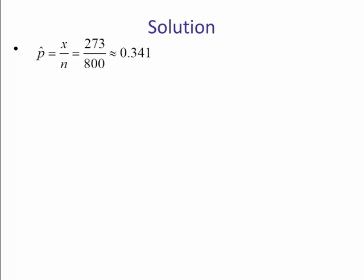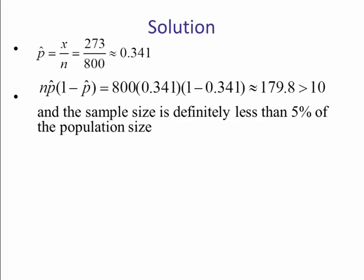So the solution: p-hat is x over n, which in this case x is 273, n is 800, and if we round to three decimal places, we get p-hat to be 0.341. Check our requirements: n times p-hat times 1 minus p-hat is 179.8, which is greater than 10. Again, sample size is less than 5% of the population size. Alpha is now 0.01 because we are doing a 99% confidence interval. So our z alpha over 2 is 2.575.